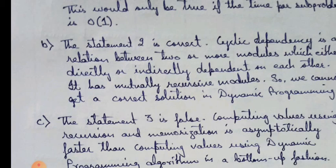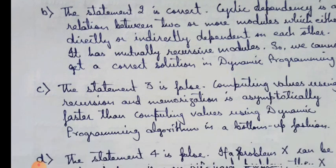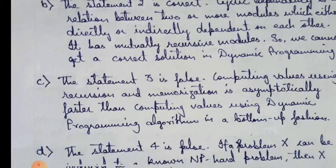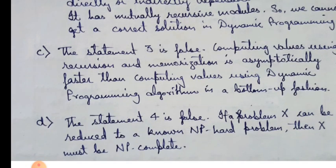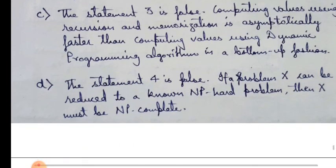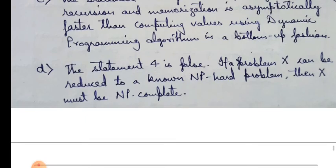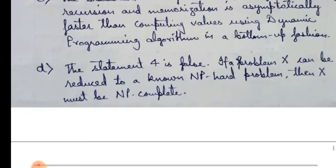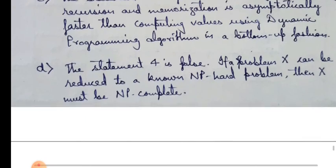The statement 3 is false. Computing values using recursion and memorization is asymptotically faster than computing values using dynamic programming algorithms in a bottom-up fashion. The statement 4 is false. If a problem X can be reduced to a known NP-hard problem, then X must be NP-complete.